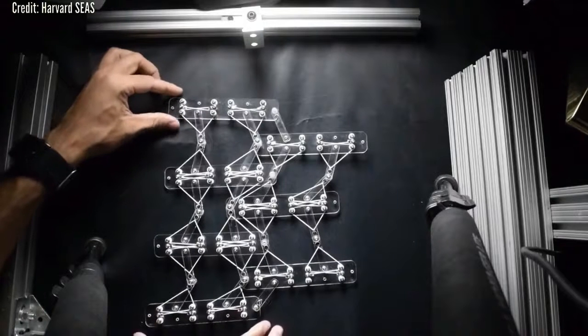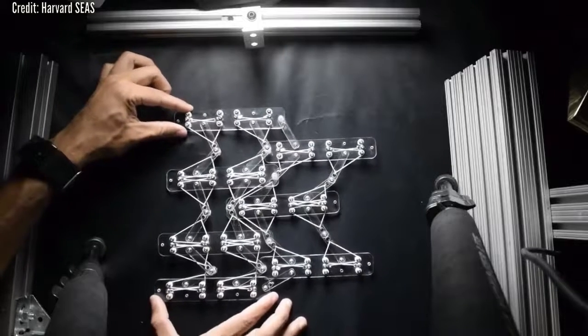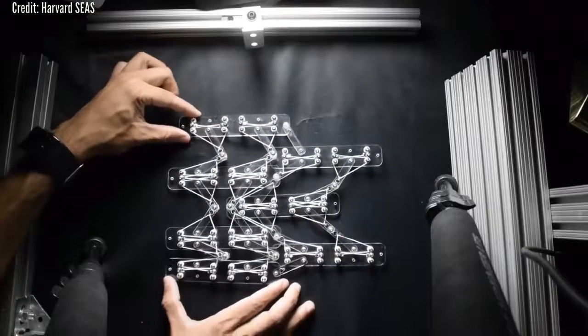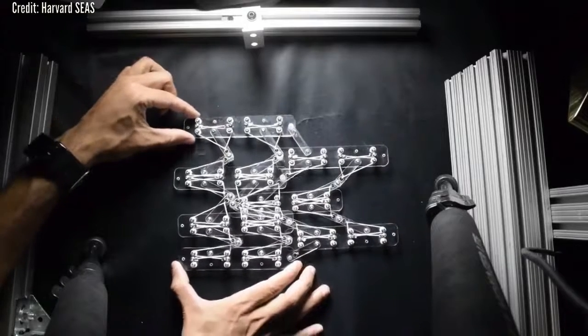One of the biggest challenges in designing shape-morphing materials is balancing the seemingly contradictory needs of conformability and rigidity. Conformability enables transformation to new shapes, but if it is too conformal, it can't stably maintain the shapes.